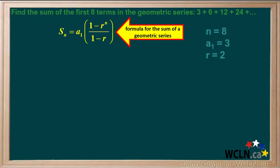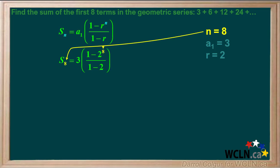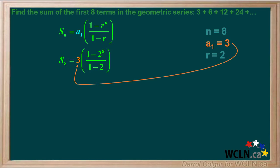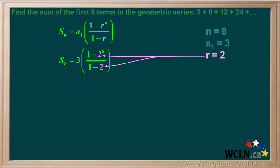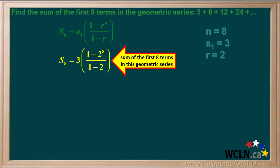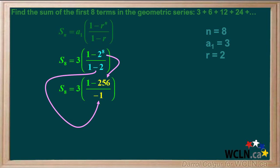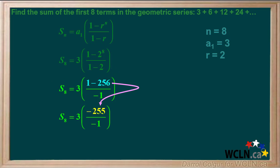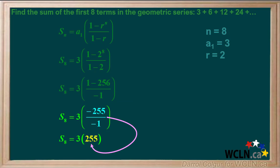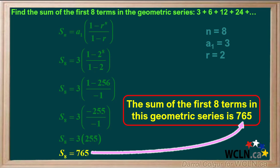We can use the formula for a geometric series to find the sum. We put in 8 for each N in the formula, 3 for A1, and 2 for each R. Solving this equation for S8 will give us the sum of the first eight terms. 2 to the 8th is 256, and 1 minus 2 equals negative 1. 1 minus 256 equals negative 255. Negative 255 divided by negative 1 equals 255. And 3 times 255 equals 765. So the sum of the first eight terms in this geometric series is 765.